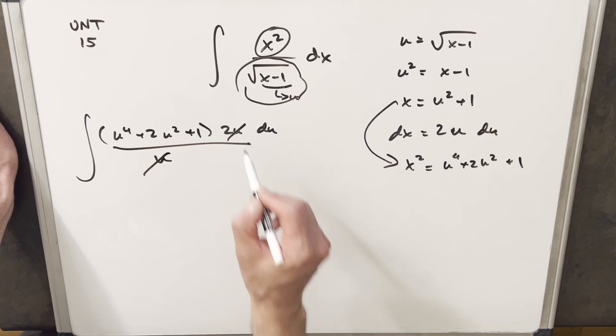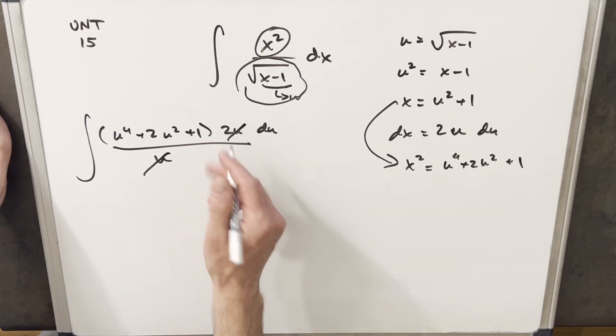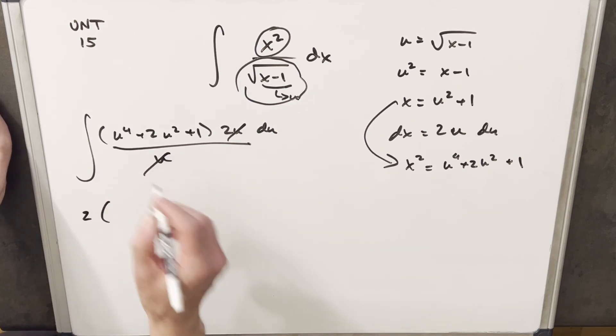And that's pretty nice, because our us are going to cancel. And now this is set up where we can just use power rule. I'm going to take this 2, we'll bring it out front, and we'll integrate.